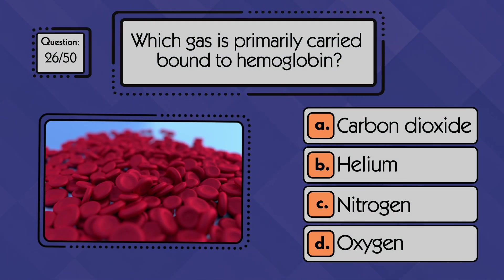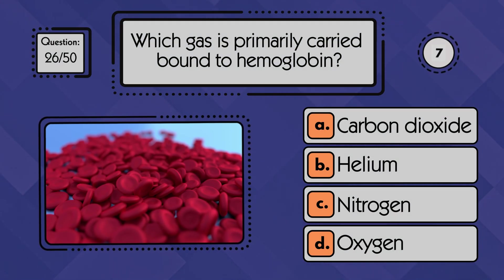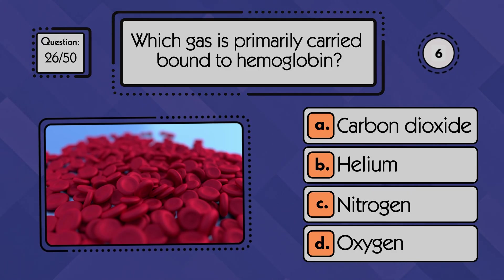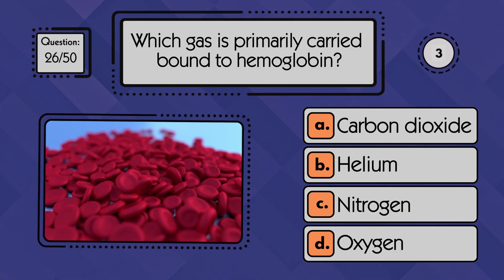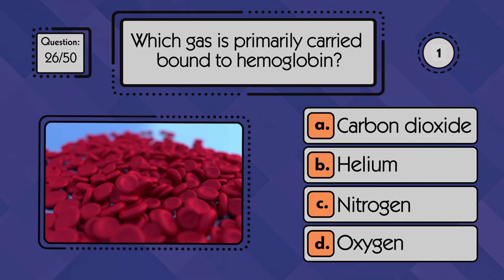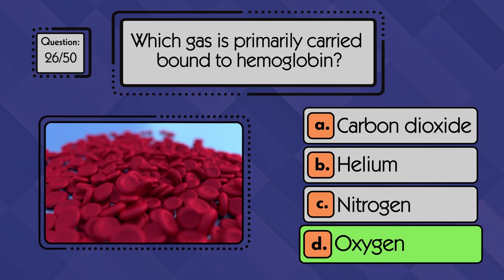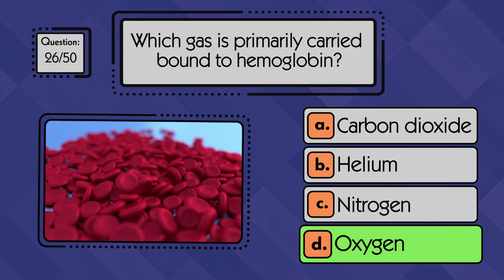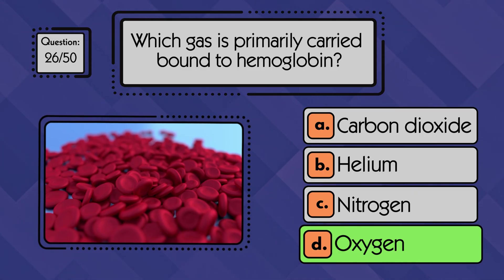Which gas is primarily carried bound to hemoglobin? Oxygen is primarily carried bound to hemoglobin, allowing it to be transported efficiently from the lungs to tissues.